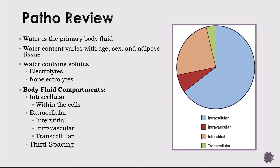Body fluids contain gases — for example, CO2 and O2 — and also solutes, which are solid substances dissolved in the water. There are two different kinds of solutes in our body's water. One being electrolytes — these develop an electrical charge when dissolved in water. Examples include sodium and potassium. Electrolytes can carry either a positive or negative charge, known as cations and anions. The other kind is non-electrolytes — substances that don't conduct electricity, such as glucose.